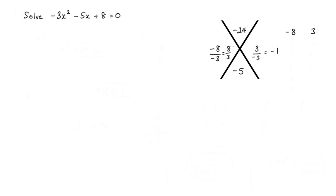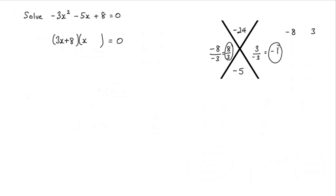Now what we do is take each of these terms and use them for the factorization. So two brackets equal zero — we take the denominator of this term and put it with x, so 3x, and the numerator gives plus 8. For the other term the denominator is 1, so we just have x, and the numerator is negative 1.